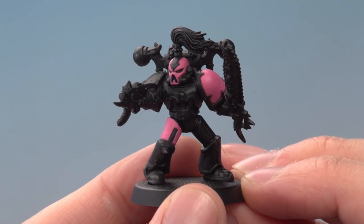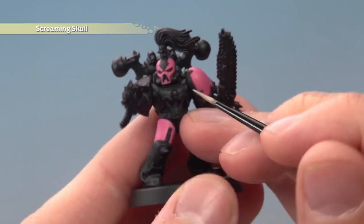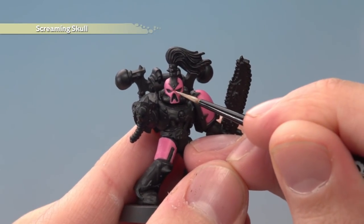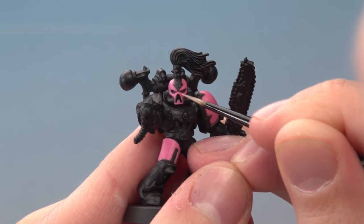Once you've applied the shade, neaten up any mistakes that may have been made. Then you're ready to apply a highlight of Screaming Skull. You want to apply a fine edge highlight here as neatly as possible.